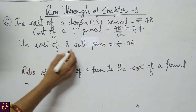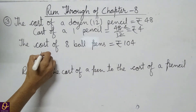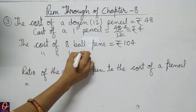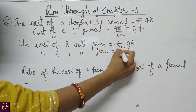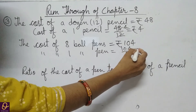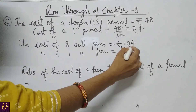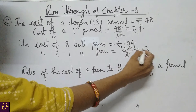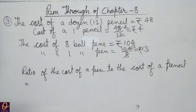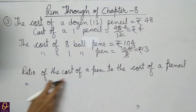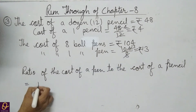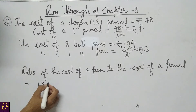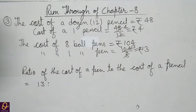Cost of 8 ball pens is Rs. 104, so cost of 1 ball pen equals 104 divided by 8, which is Rs. 13. Now the ratio of cost of a pen to cost of a pencil is 13 to 4. This is our answer.